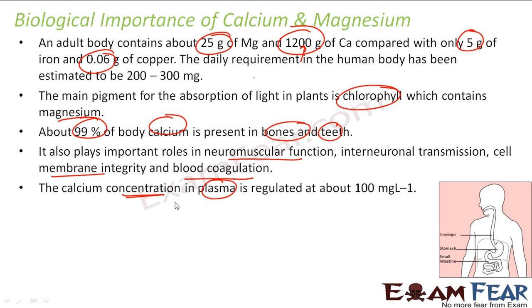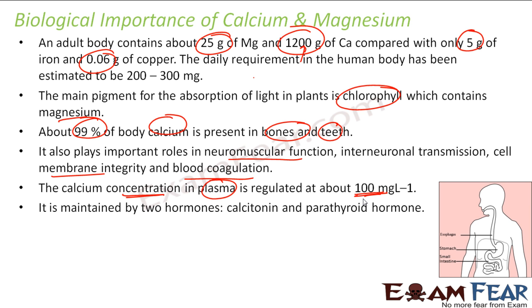The calcium concentration in plasma is about 100 mg per liter, and this is maintained by two hormones — calcitonin and parathyroid hormones. These two hormones maintain the calcium concentration.